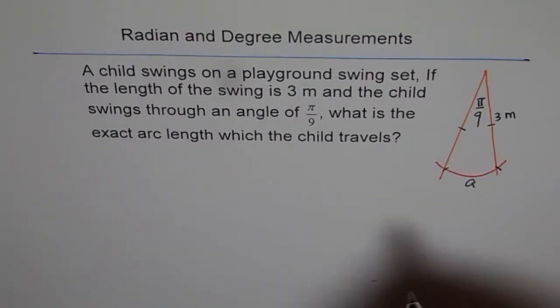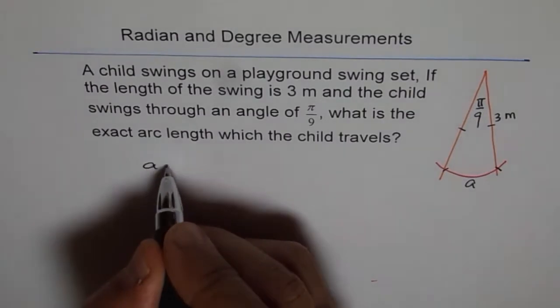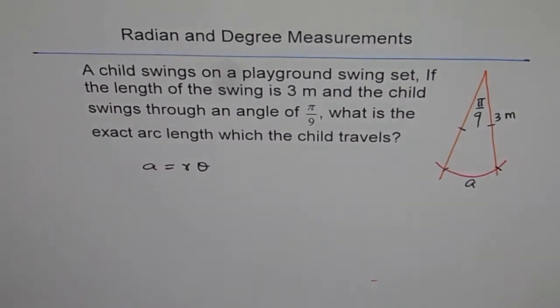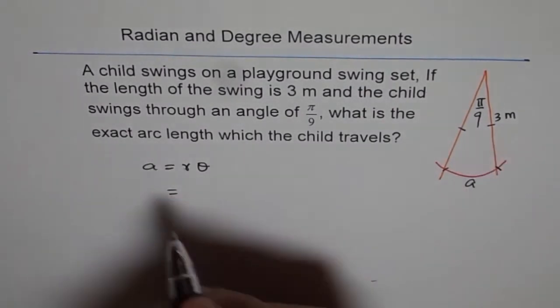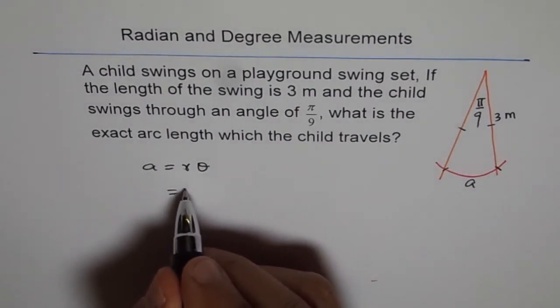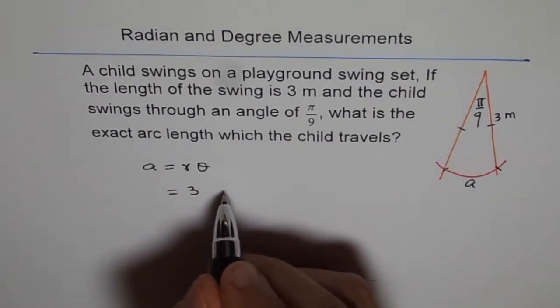So what is it? It is A equals to r theta where theta is in radians. Fortunately, we are given theta in radians, right? Therefore, we can write this as A equals to r is 3 and theta is π by 9.